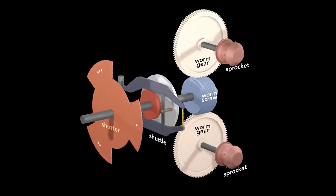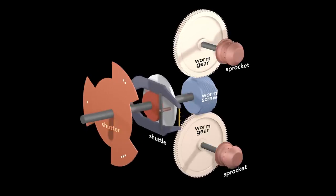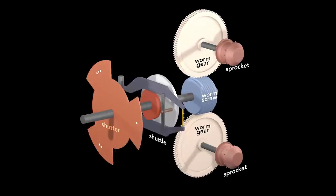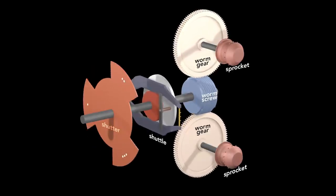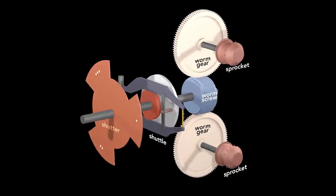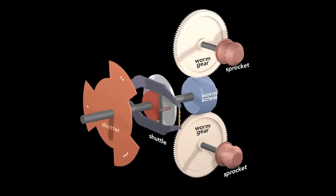Since there are 14 teeth on a sprocket, the top sprocket moves one frame worth of film from the supply reel, and the bottom sprocket pulls one frame through the projector. This setup keeps all the important mechanisms in sync.